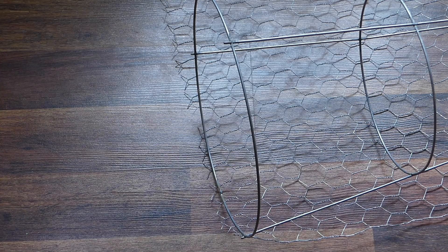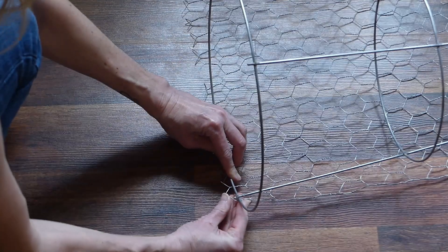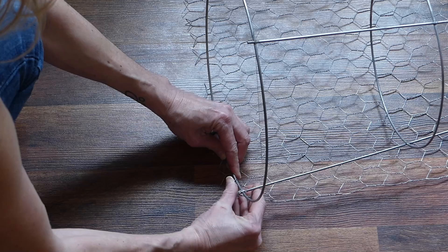Lay out the chicken wire—it's easier to work with if it's not rolling back up on itself. Set the tomato cage on the chicken wire and begin working with one section at a time. I found this to be the easiest way to not only keep the wire taut but to keep the pattern of the chicken wire straight.